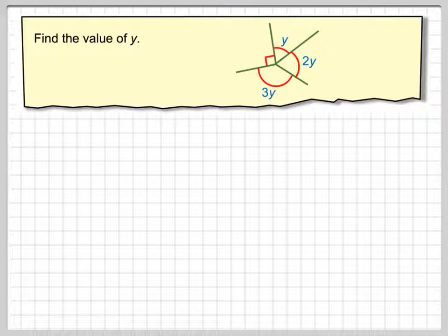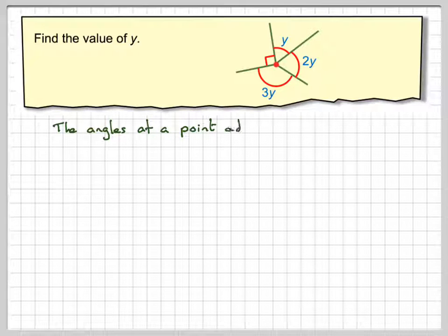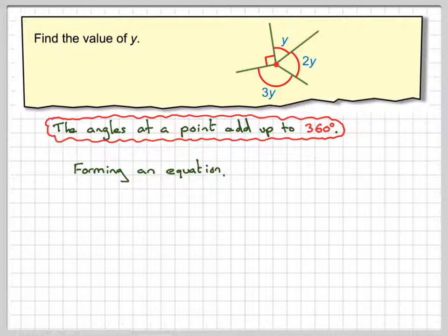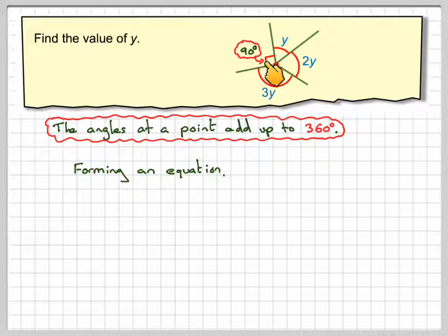The main point to consider here is that the angles at a point add up to 360 degrees. So forming an equation, we know that this angle here is actually 90 degrees. That's what that square means.